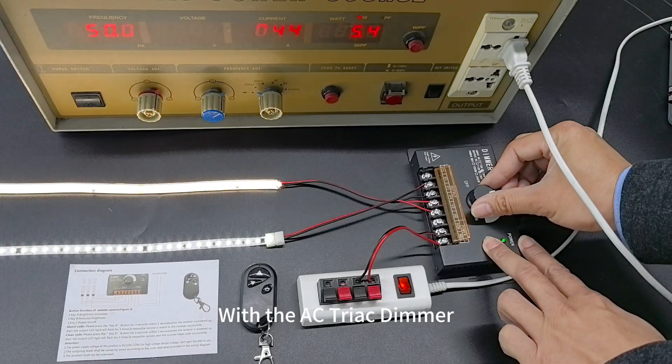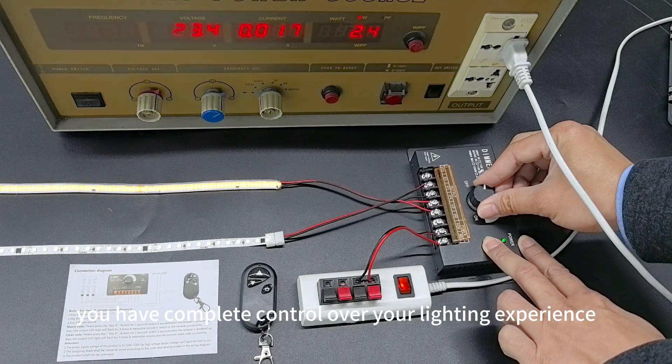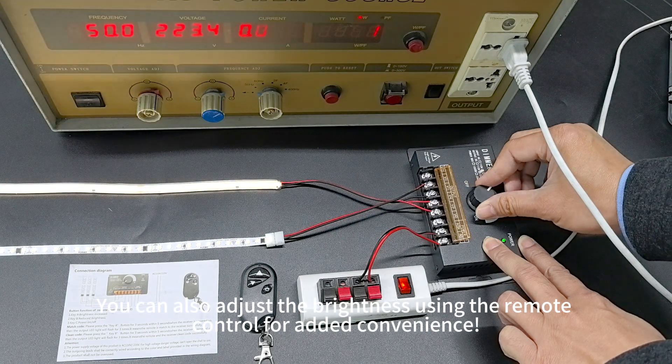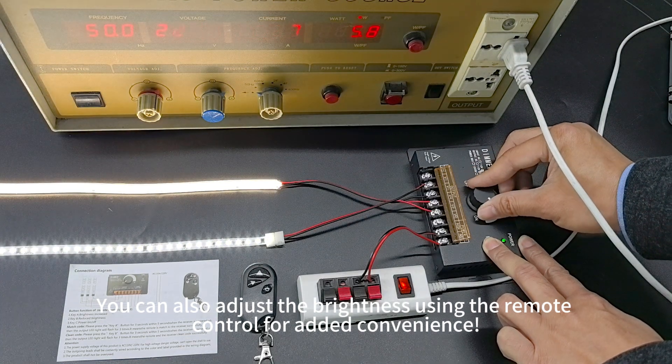With the AC Triac dimmer, you have complete control over your lighting experience. You can also adjust the brightness using the remote control for added convenience.